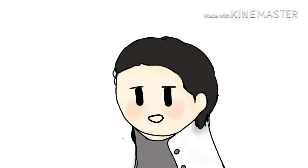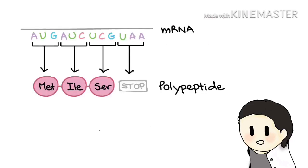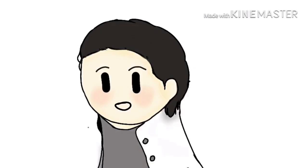Finishing up: termination. Termination is the stage in which the finished polypeptide chain is released. It begins when a stop codon — UAG, UAA, or UGA — enters the ribosome, triggering a series of events that separate the chain from its tRNA and allow it to drift out of the ribosome.